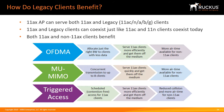11ax uses the fast lanes, and 11ac devices have fewer clients to contend with, so they're happy, and since this is done more efficiently, they get more airtime. The 11ax technologies of OFDMA, multi-user MIMO, triggered access, BSS color, long OFDM symbol, and 1024 QAM serve 11ax clients in a much more efficient way, which clears up airtime for the legacy devices.